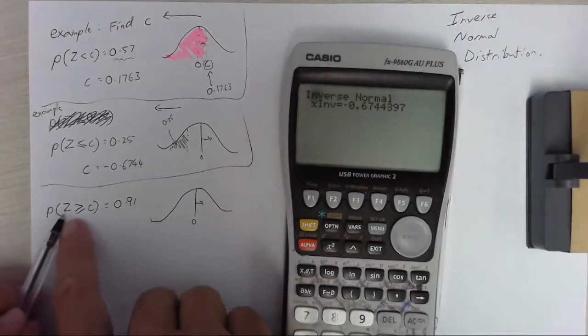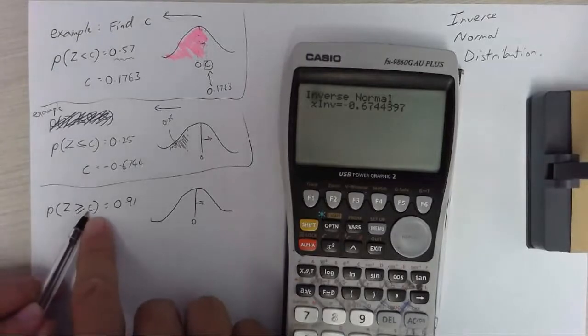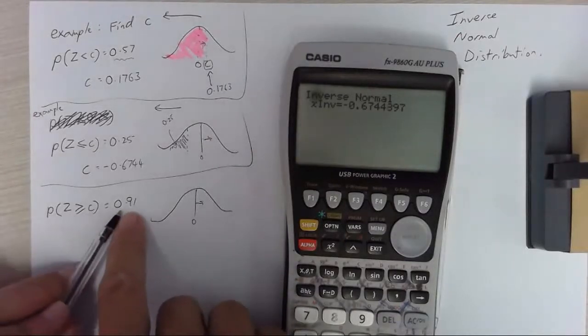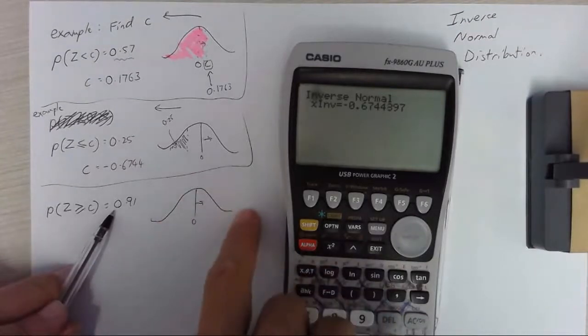The difference here is that z is greater than c and the probability is 0.91. So 0.91, the whole area is 1.